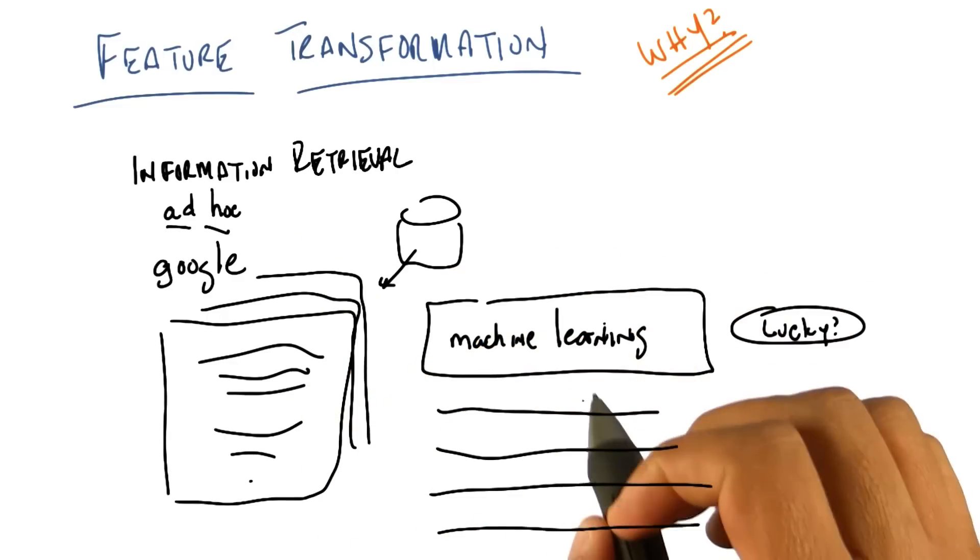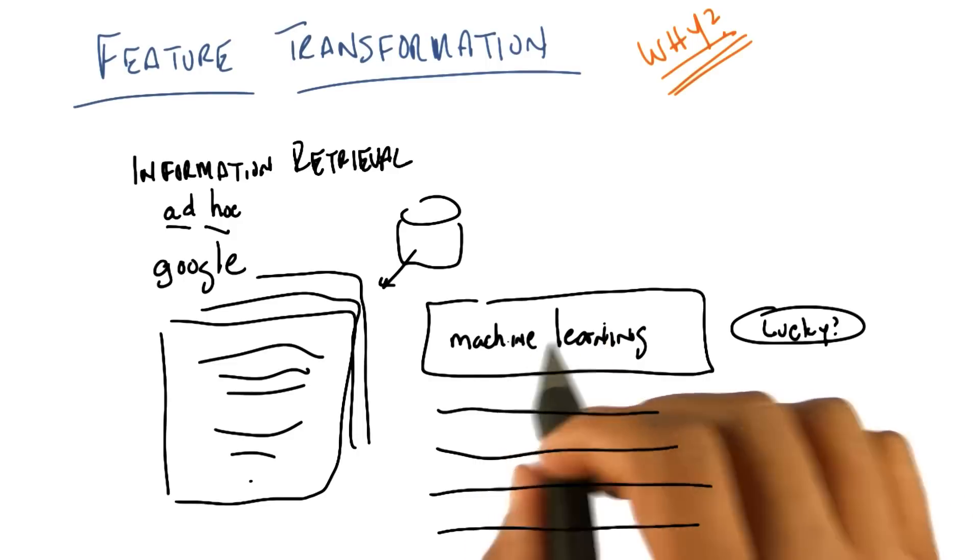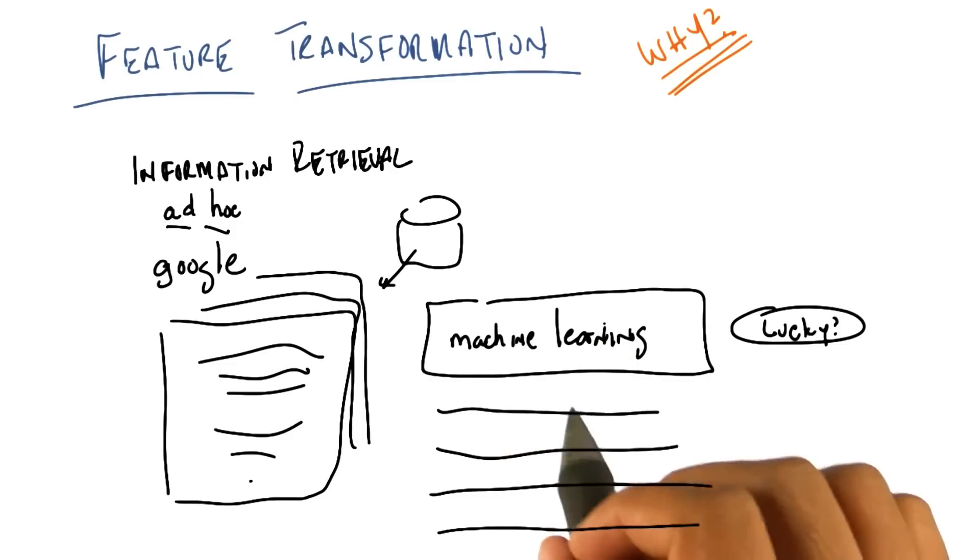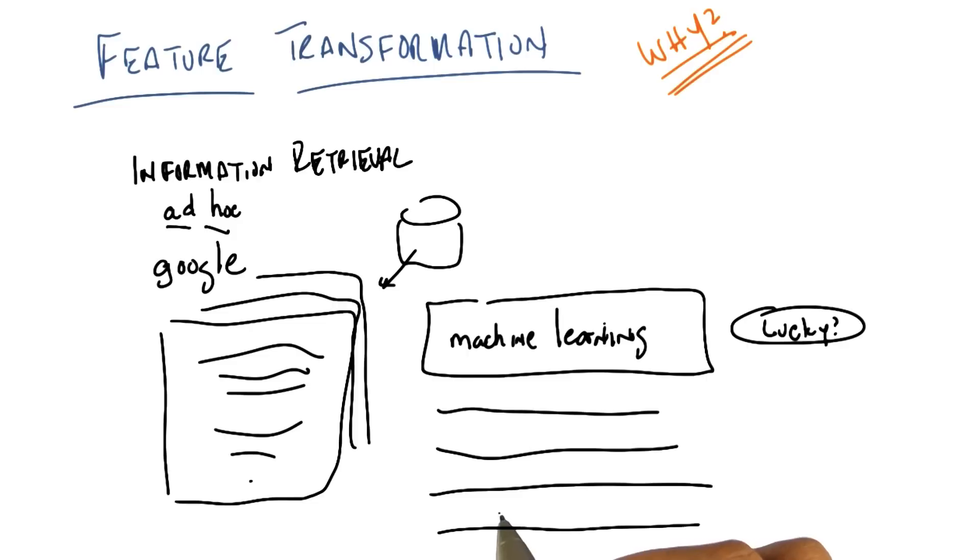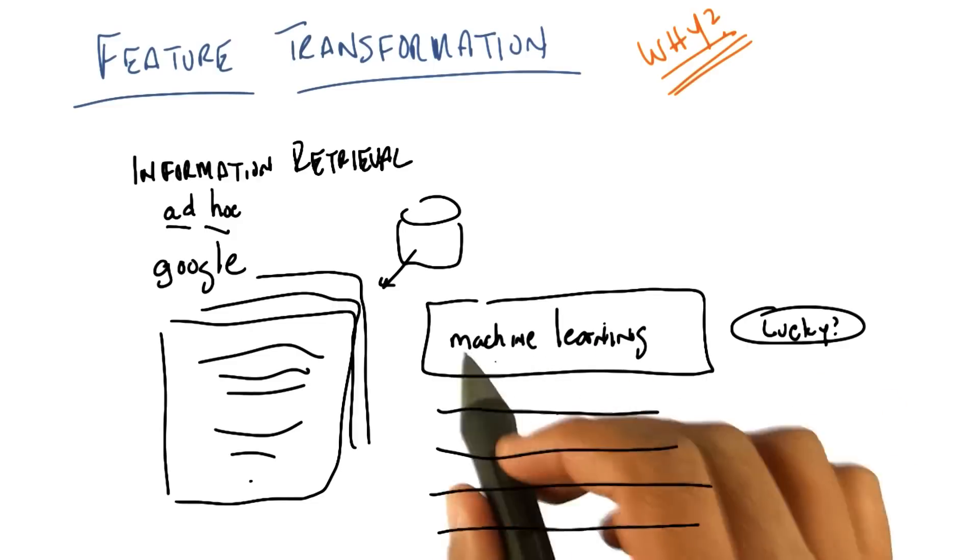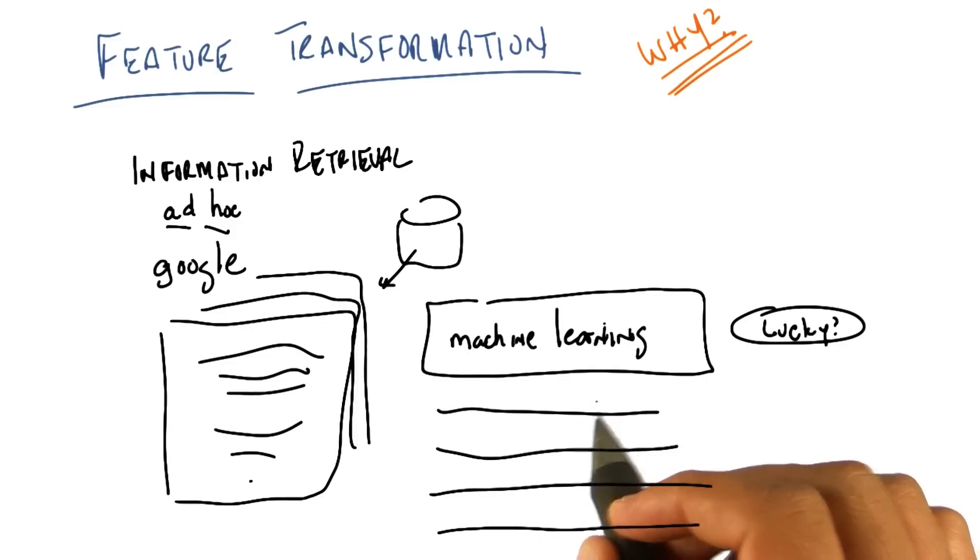And this is the ad hoc query problem, the ad hoc retrieval problem. I give you some features, which in this case are words, and you return objects, in this case documents, that are somehow relevant to those features. Okay? So we do this all the time.